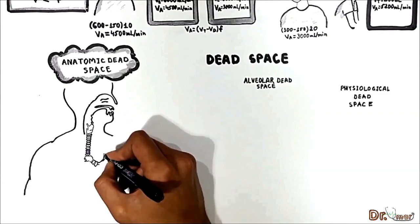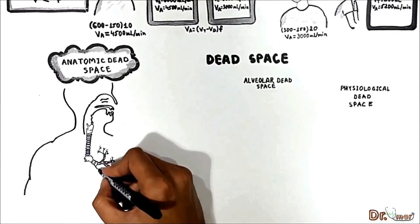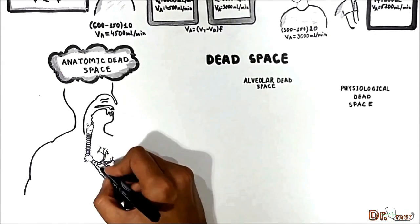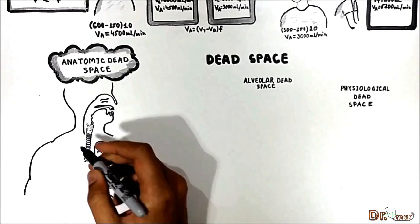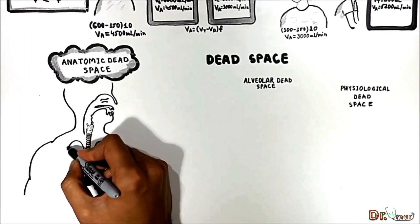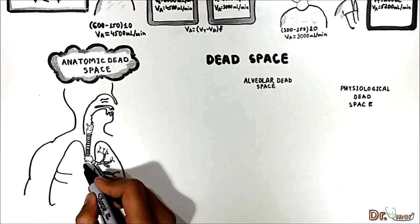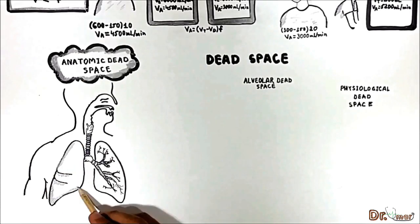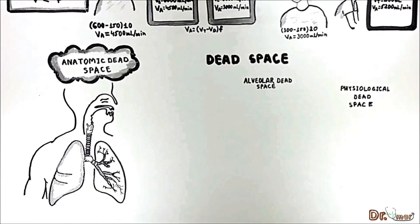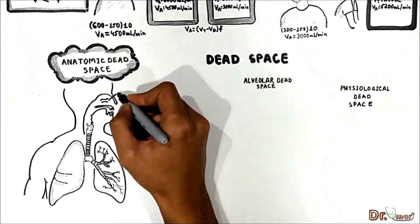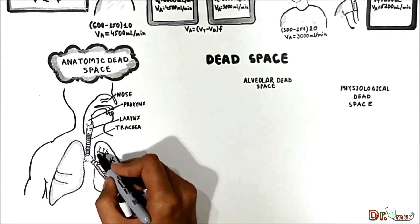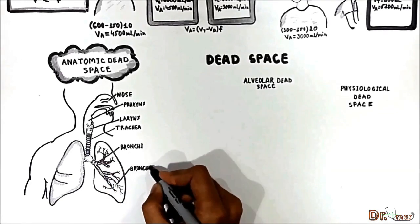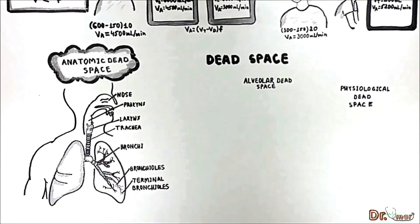Anatomic dead space is a region that, because of the anatomical functional structure of its tissues and organs, is not capable of oxygen and carbon dioxide exchange with the blood. Anatomic dead space includes the conducting zone: the nose, pharynx, larynx, trachea, bronchi, bronchioles, and terminal bronchioles.